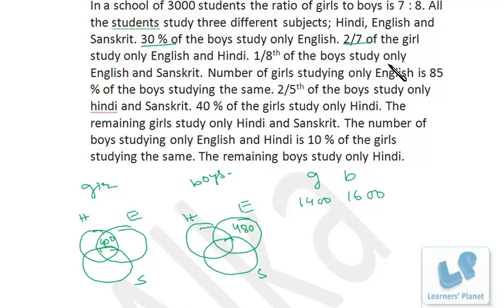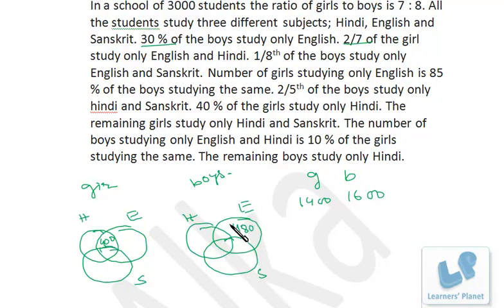1/8 of the boys study only English and Sanskrit. 1/8 of 1600 means 200. They study only English and Sanskrit, so that region is 200.